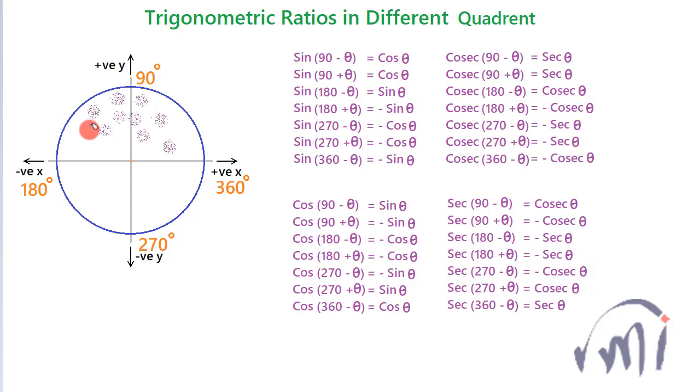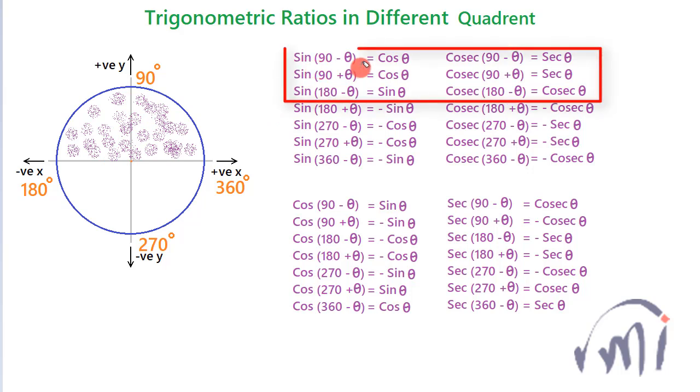And in this region, the y-axis is positive, that means if the angle is in this region, the value of sine will be positive. So all the angles with sin(90 - θ), sin(90 + θ), and sin(180 - θ), all these values are always positive.